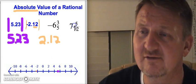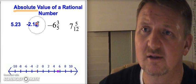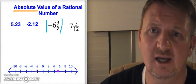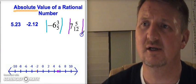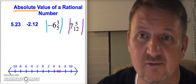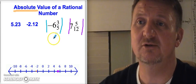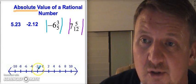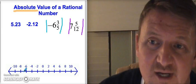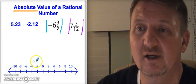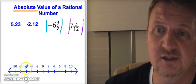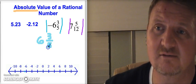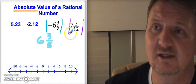Let's look at two more fraction examples: negative six and three-fifths, and seven and five-twelfths. First, I draw my absolute value bars. For negative six and three-fifths, I start at zero and count left — two, four, six — and three-fifths is a little better than halfway to the next number. The distance from zero is two, four, six, and a little bit more — about three-fifths more. So the absolute value of negative six and three-fifths is six and three-fifths.